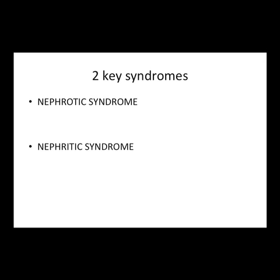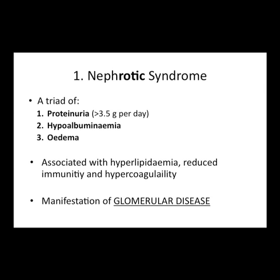There are two absolutely key syndromes you need to recognize, describe, and know causes of: nephrotic syndrome and nephritic syndrome. They are both triads — a set of three symptoms. The way I think of it: in nephrotic syndrome, the 'o' is big — think Michelin man — this is the one associated with edema. The key thing you lose in nephrotic syndrome is protein. If you lose protein, you get a low level of albumin in the blood.